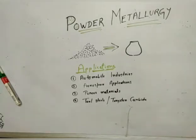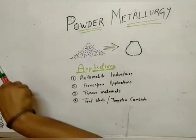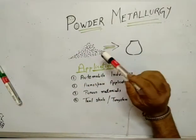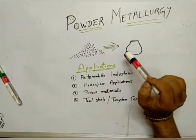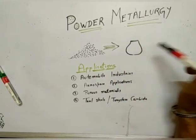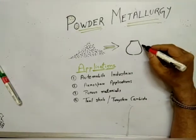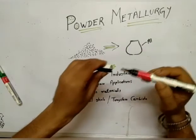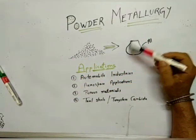Hello friends, welcome to this lecture on powder metallurgy. Powder metallurgy is a very unique manufacturing process where we try to create or manufacture metal parts using metallic powders. If you can understand this diagram, you will understand 90% of powder metallurgy. Suppose this is our finished product, made of aluminum — I want a product made of aluminum which looks somewhat like this.